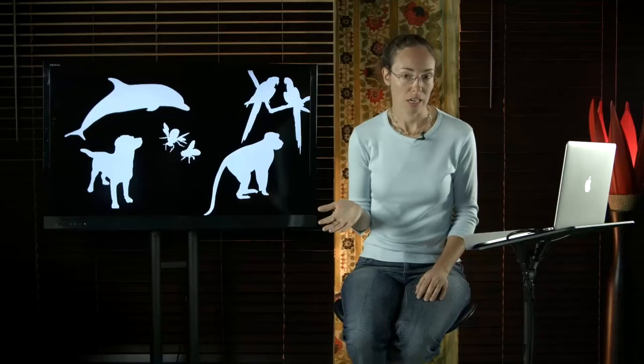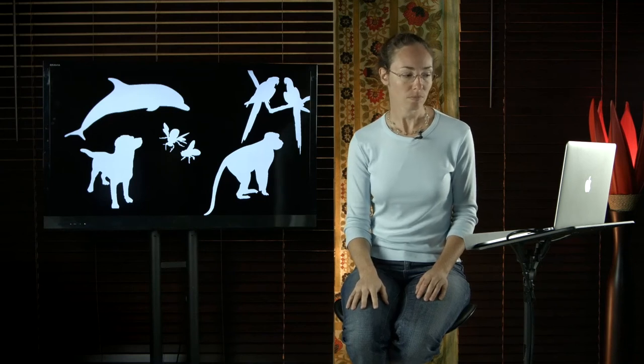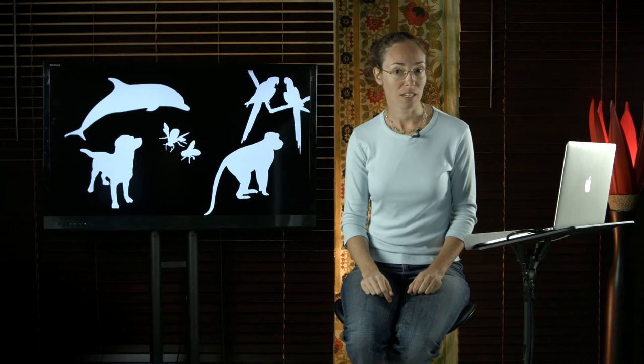Vervet monkeys demonstrate control over use. Vervet monkeys have three warning cries. One for snakes, one for eagles, and one for leopards. People say this is not language because it's instinctive. But even vervets won't cry warning if no other vervets are around, so control over use and presence of intentionality. They can even lie, use a warning cry when no predator is present.